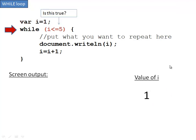It goes to the while loop and checks to see if this condition is true. Is i less than or equal to 5? Well yes, i is less than or equal to 5, because 1 is less than or equal to 5.